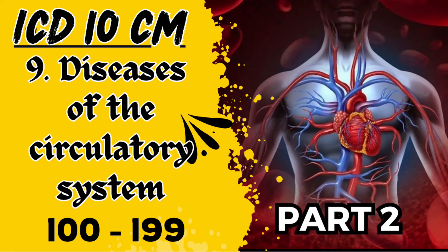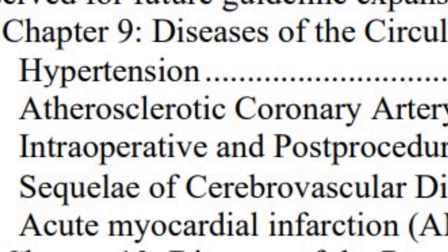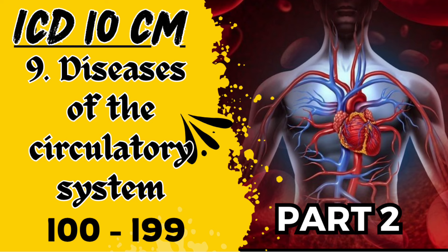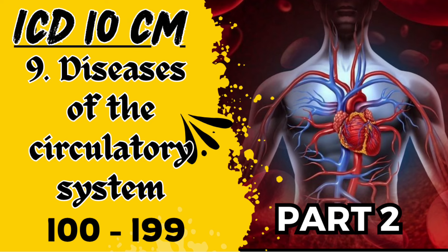Hello medical coders! Today's video covers chapter-specific guidelines in ICD-10-CM. I've already covered chapter 8 and the hypertension section of chapter 9. Since chapter 9, diseases of the circulatory system, is really big, we split it into two parts. In today's part 2, we'll cover atherosclerotic coronary artery disease and angina, intraoperative and post-procedural cerebrovascular accident, and acute myocardial infarction (AMI).